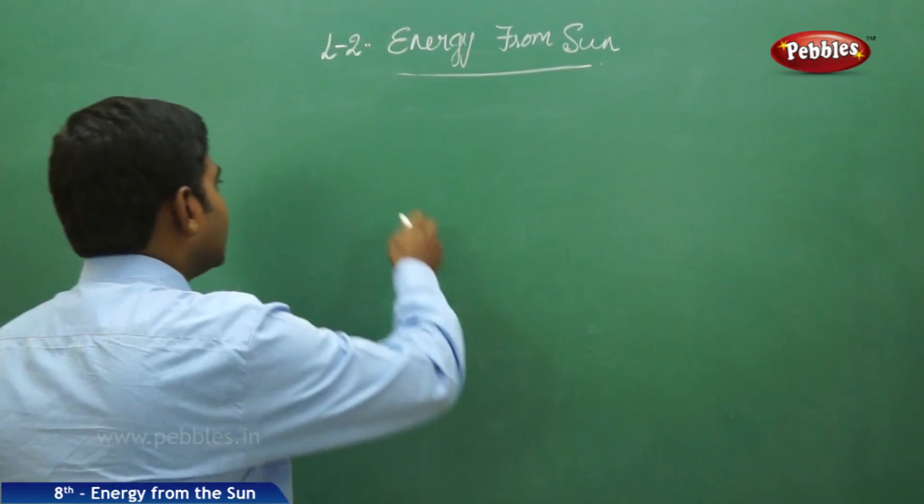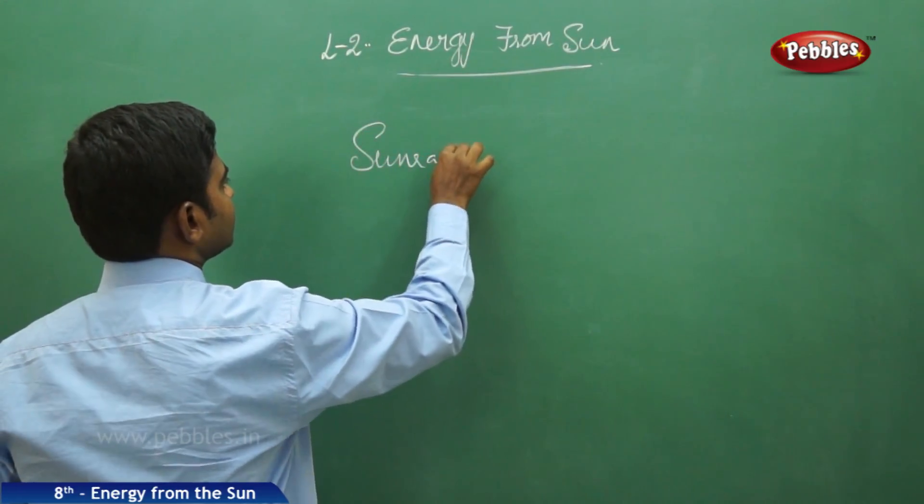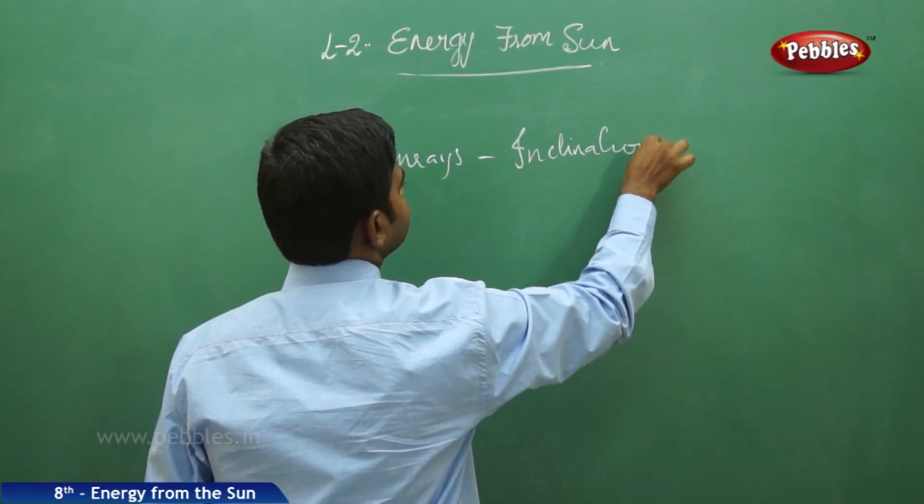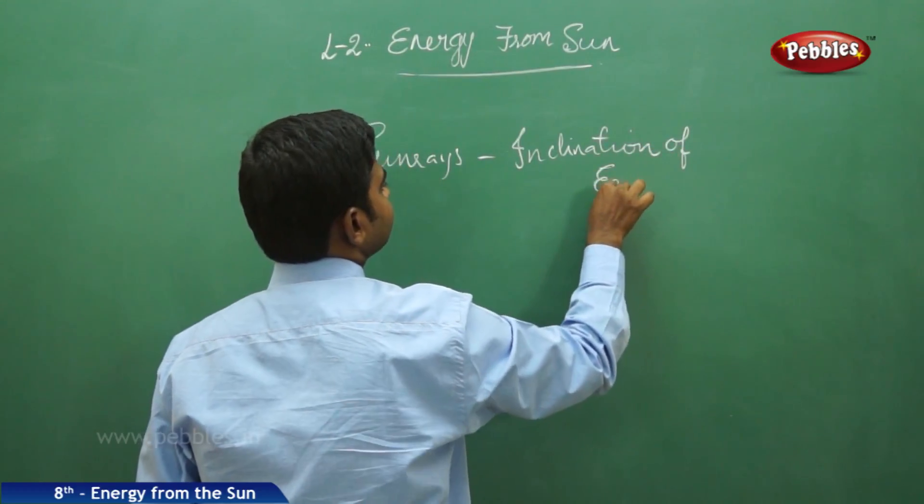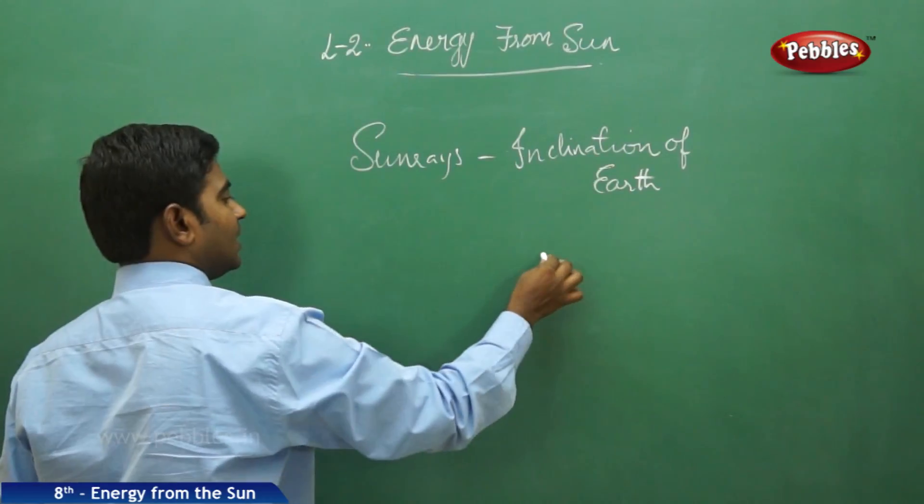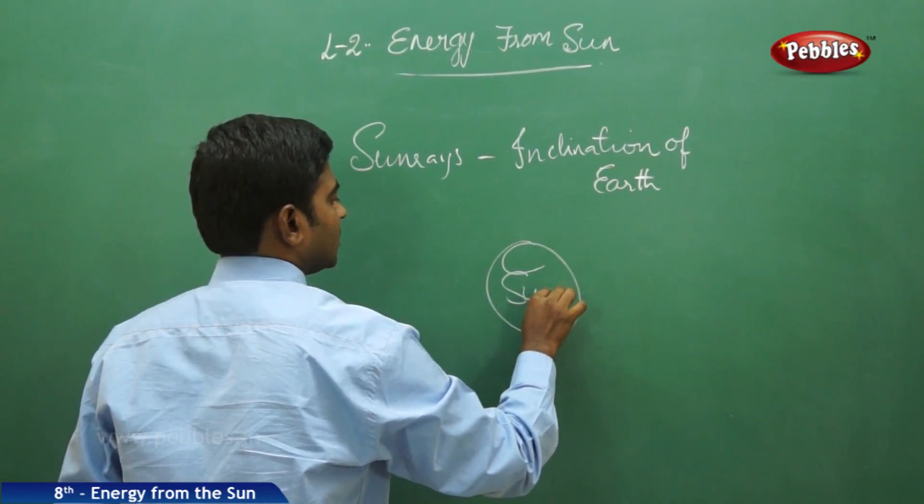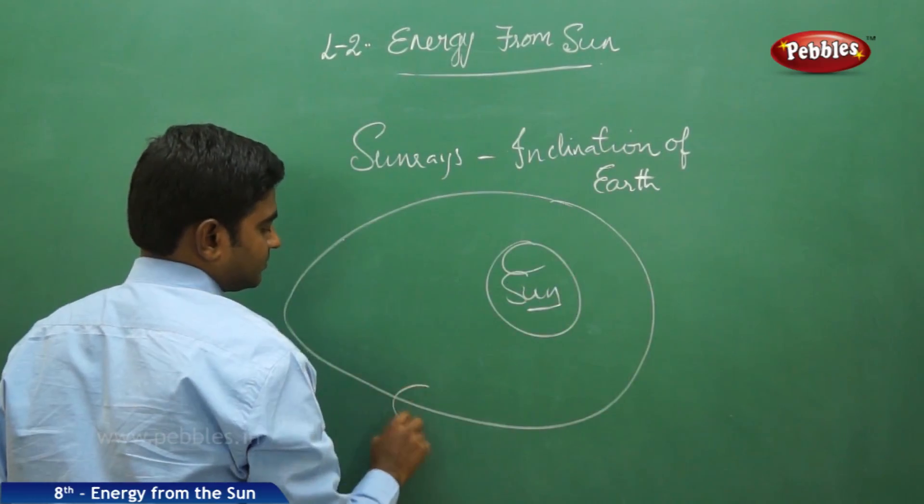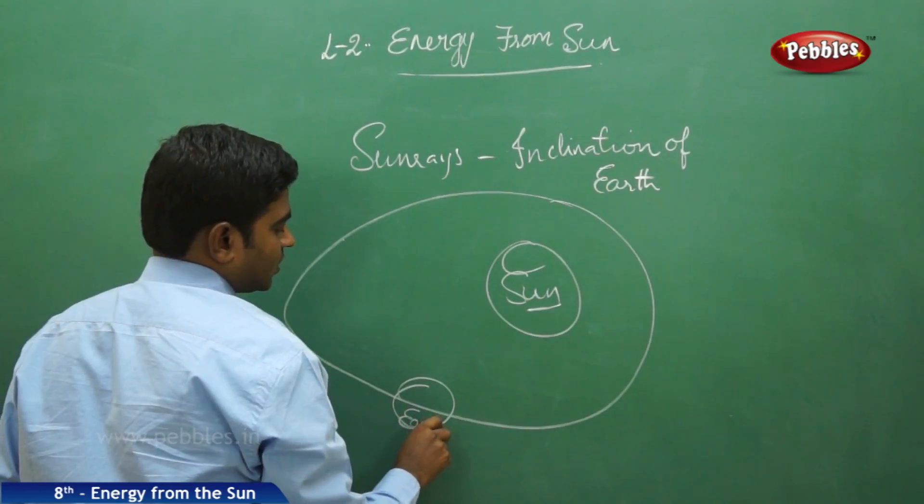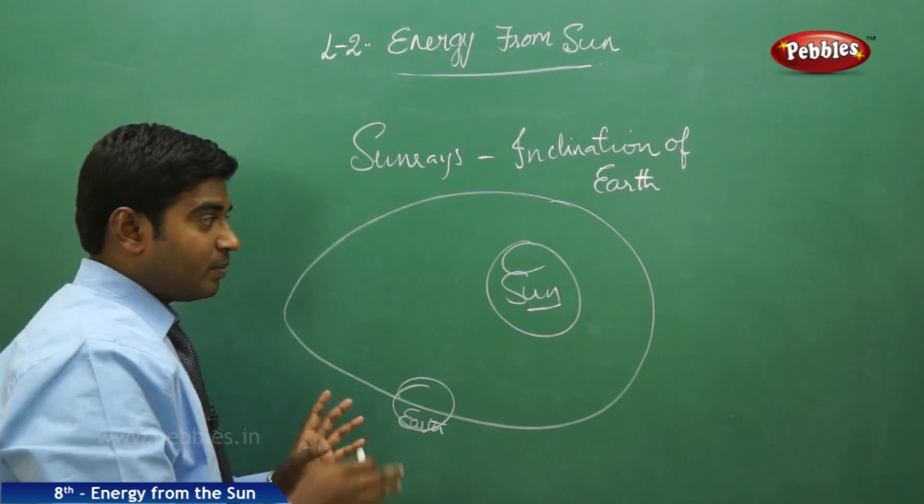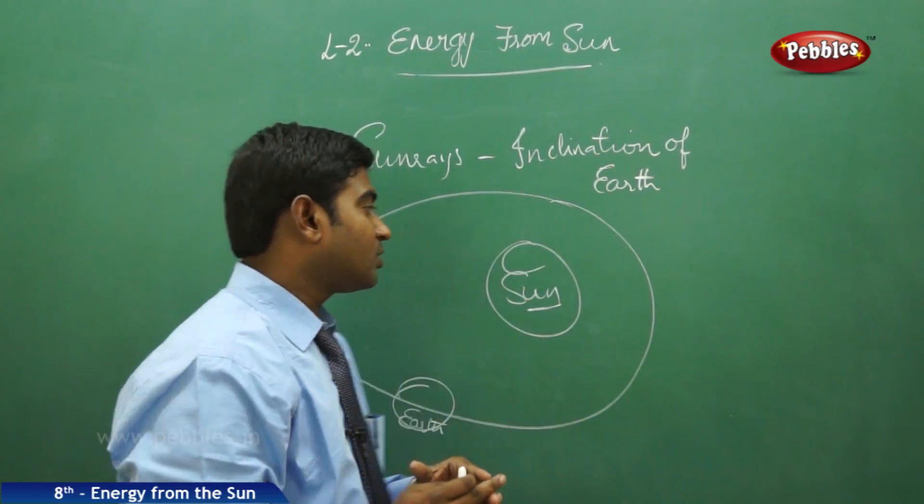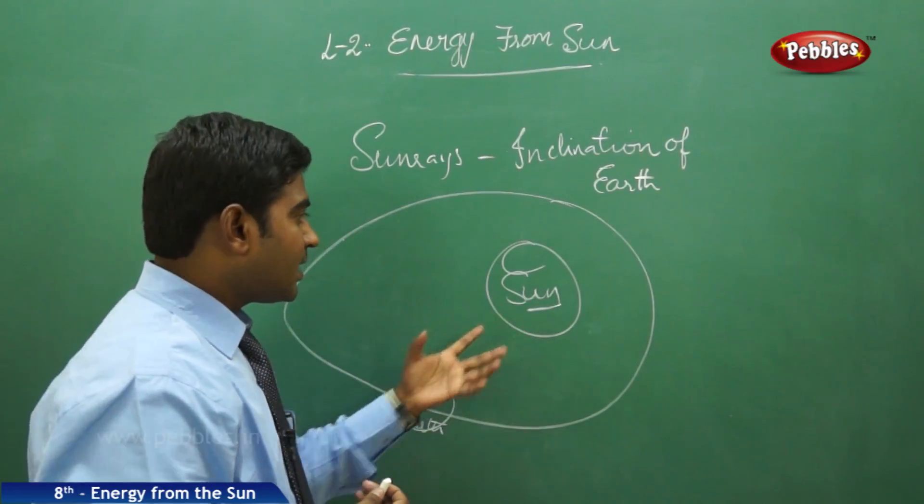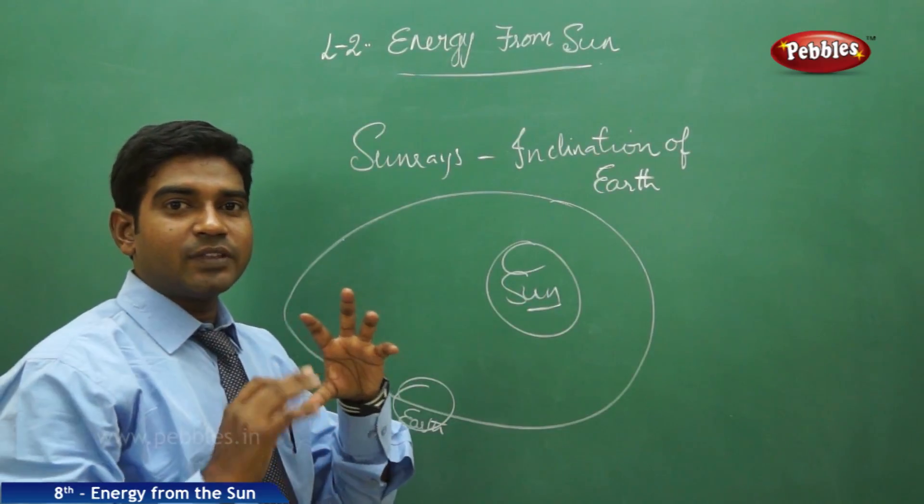For that, we have to study the sun rays and inclination of the earth. The sun is at the center and we have the rotation of the earth moving around. This movement makes different kinds of seasons and different amounts of sun rays at different places. To understand this better, we have to understand the concept of the earth very clearly.